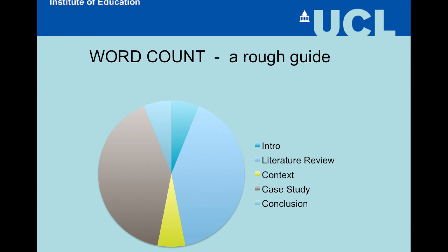Please accept this as a rough guide and not written in tablets of stone. The LMCI assignment breaks down into five sections: three shorter sections and two longer ones. The short sections — the introduction, the context, and the conclusion — combined give you about 1,000 words. The literature review should be about 2,000 words, and the case study itself should also be 2,000 words.